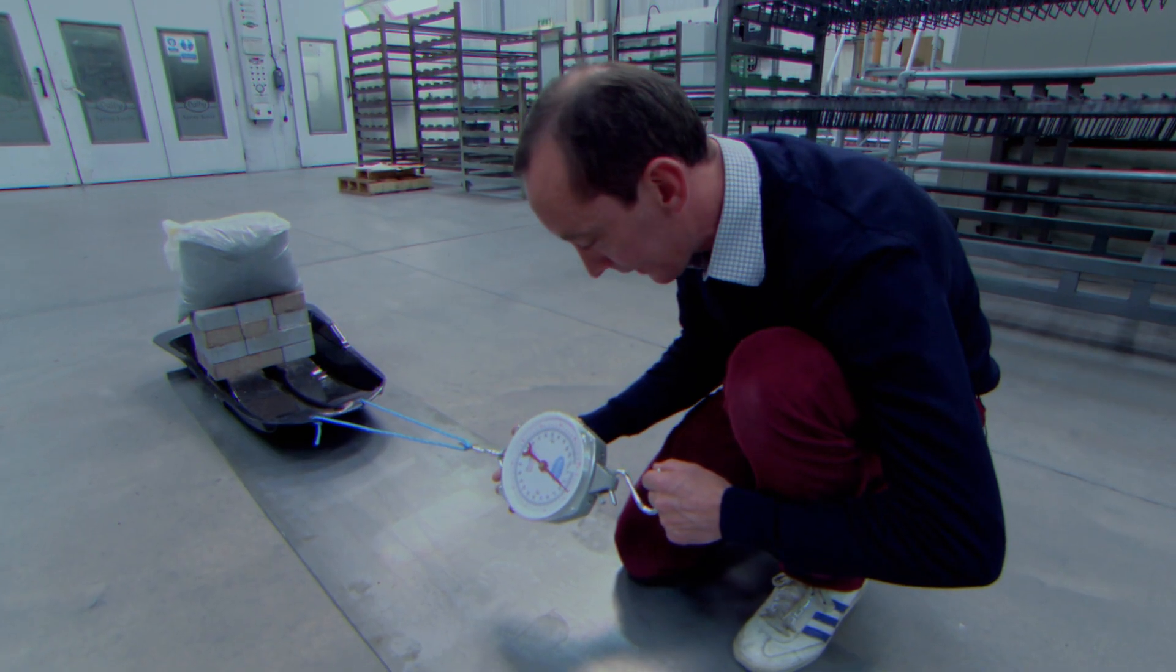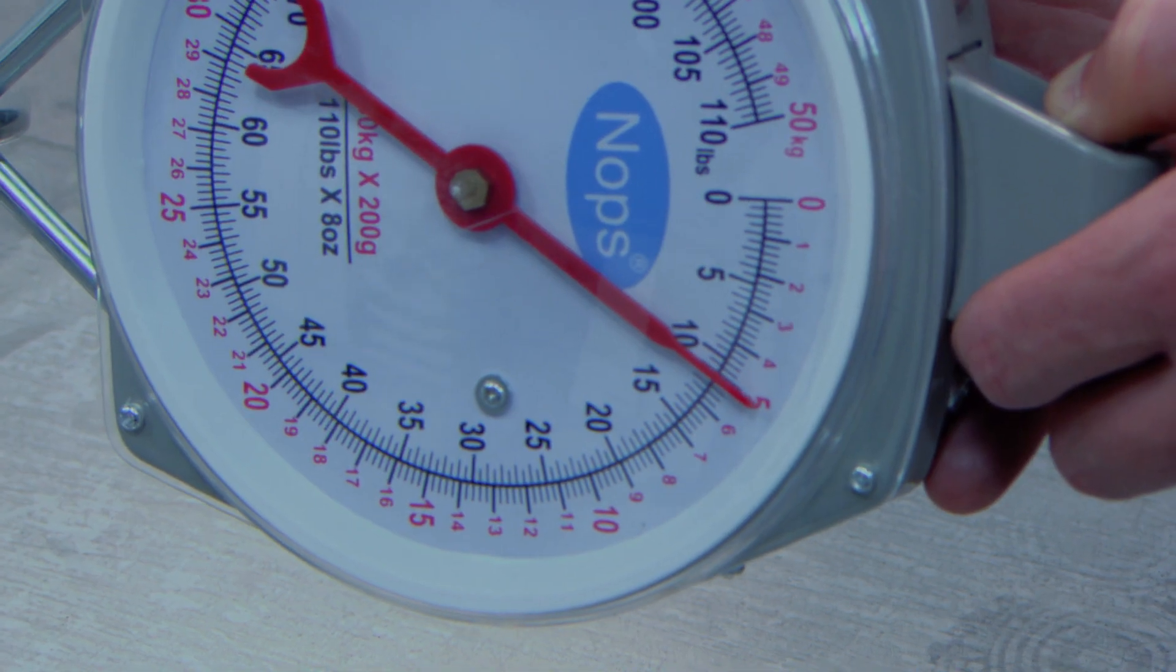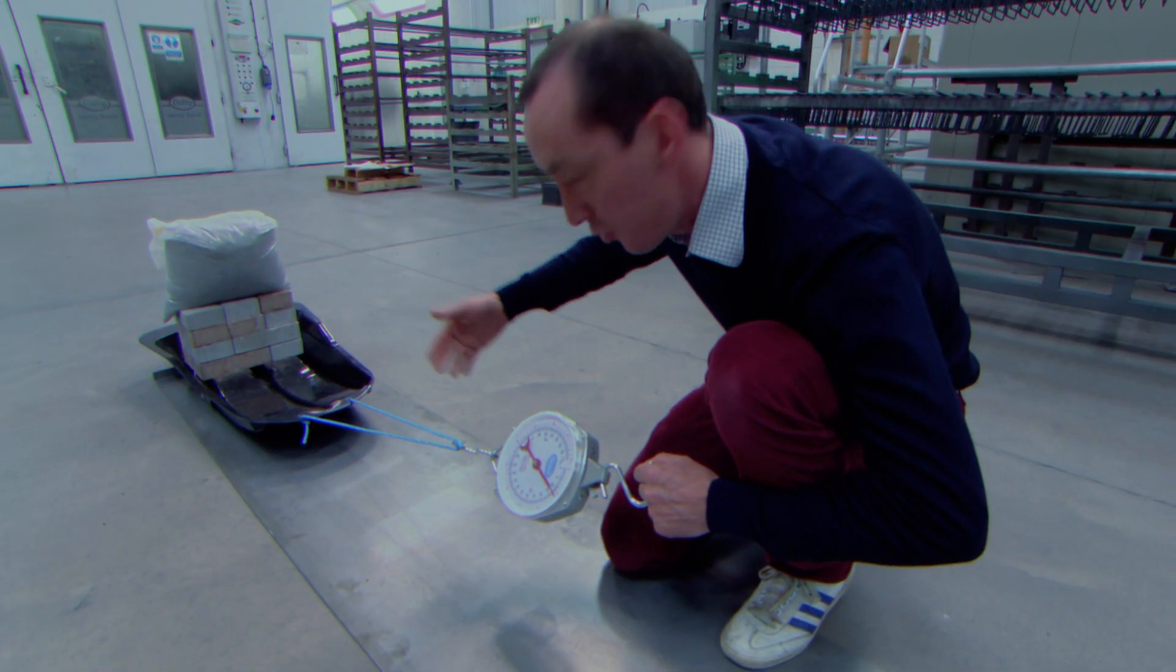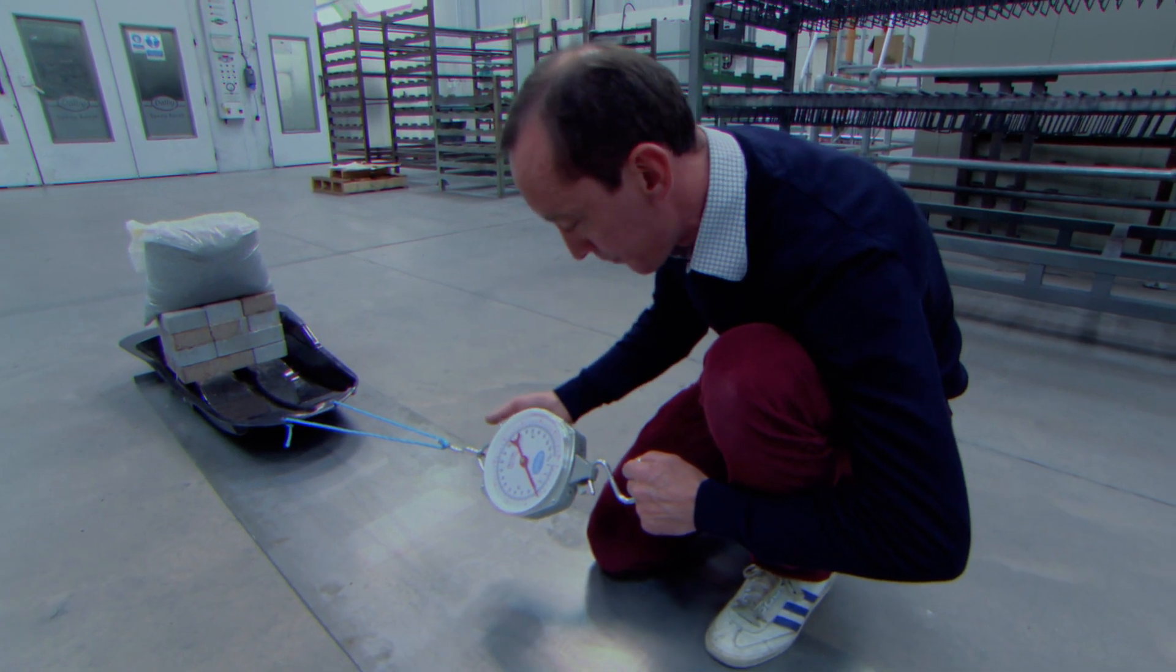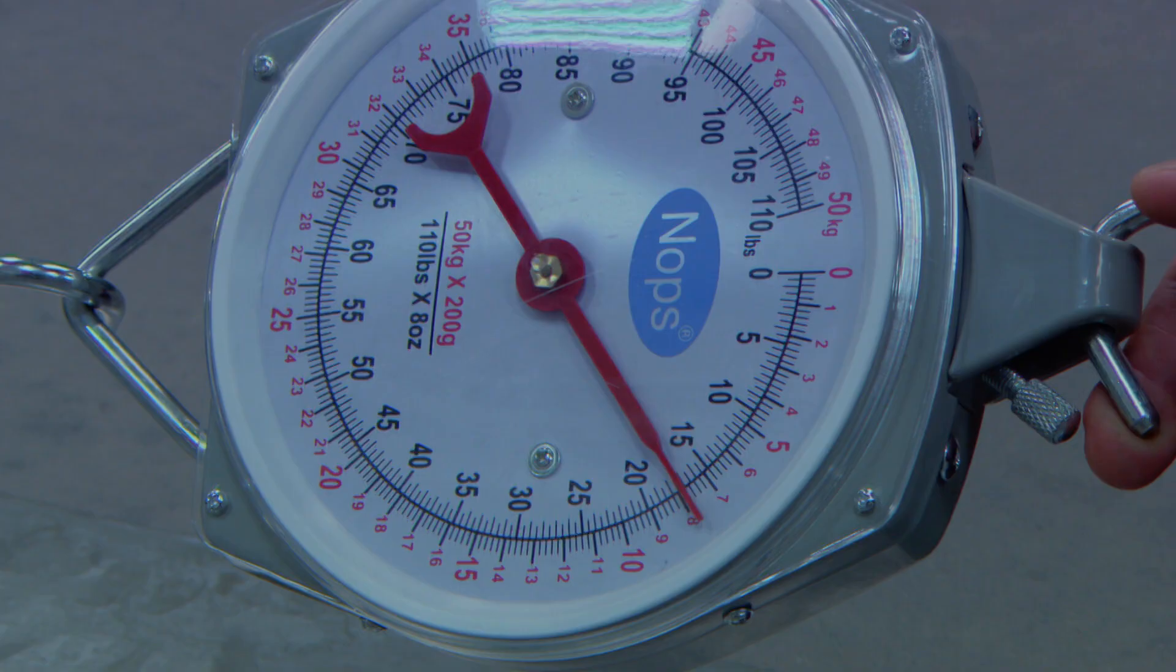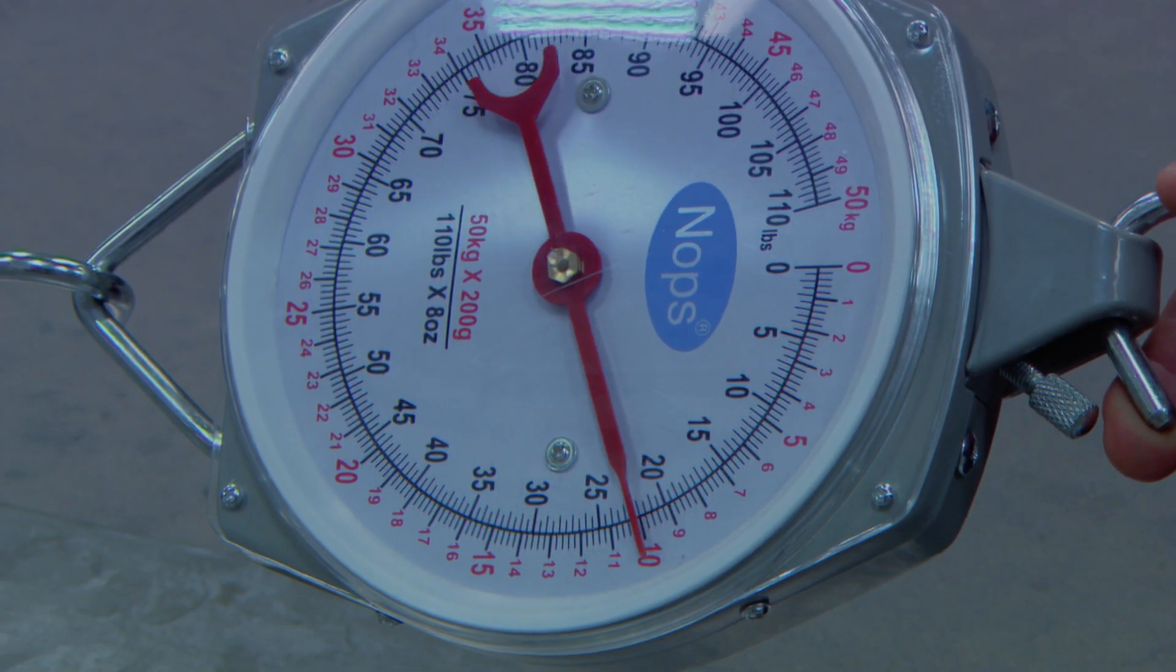As I start to pull against this now, you can see I've got 5 kilograms and I've still got no movement. So that's the friction preventing my sled from moving. I'm up to 7 kilograms, 10 kilograms, 11.